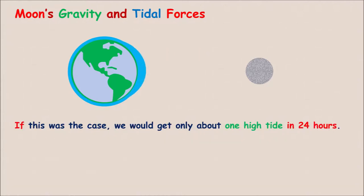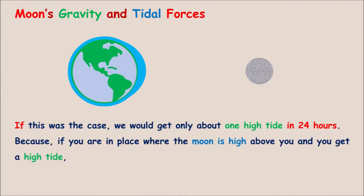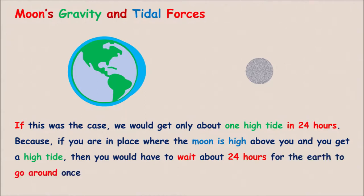If this was the case, we would get only about one high tide in 24 hours. Because if you are in a place where the moon is high above you and you get a high tide, then you would have to wait about 24 hours for the earth to go around once and you see the moon up again and another high tide.